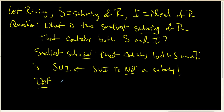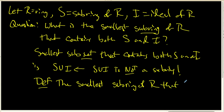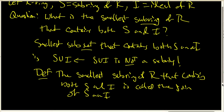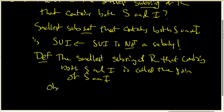We're going to call the smallest sub-ring of R that contains both S and I the join. And one thing that is important to realize is that, obviously, S union I has to be a subset of the join.